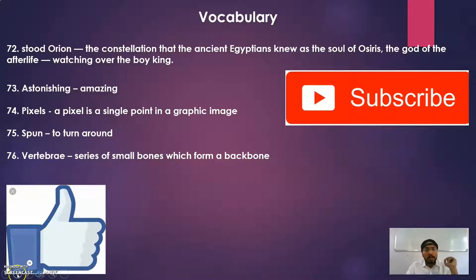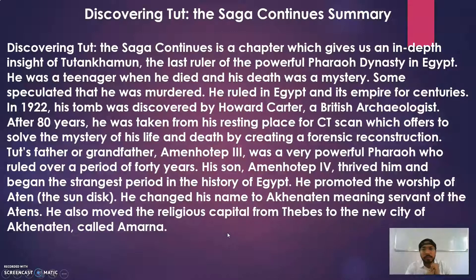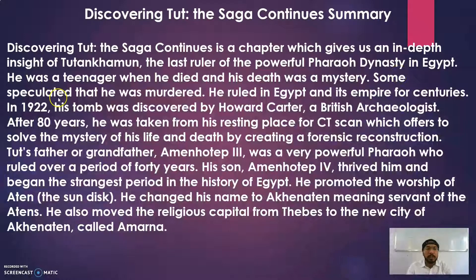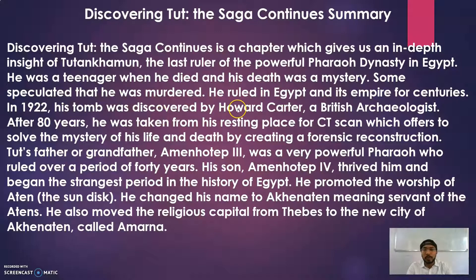Now I come to the summary part. 'Discovering Tut: The Saga Continues' gives us an in-depth insight into Tutankhamun, the last ruler of the powerful pharaoh dynasty in Egypt. He was a teenager when he died and his death was a mystery — no specific reason is clear even now; research is still ongoing. Some speculated — meaning without proof — that he was murdered. He ruled Egypt and its empire. In 1922, his tomb was discovered by Howard Carter, a British archaeologist.